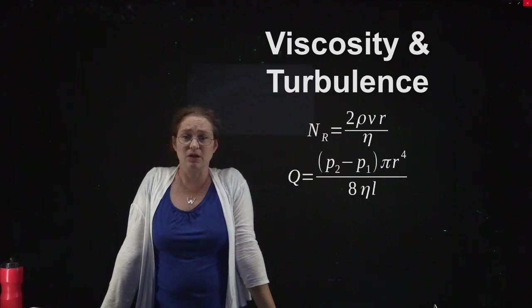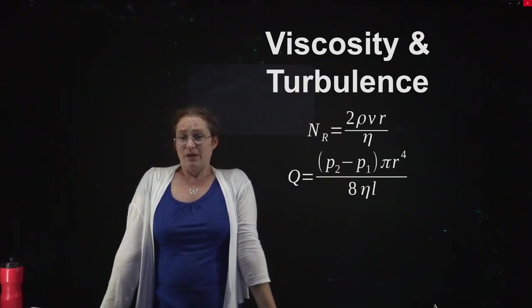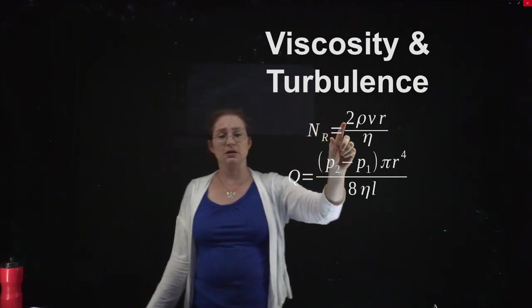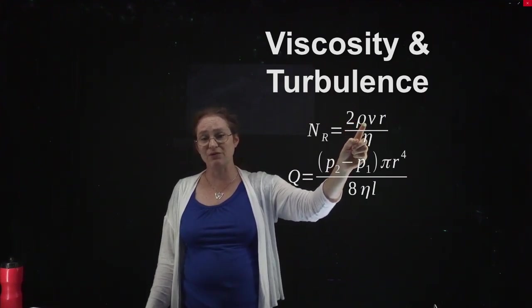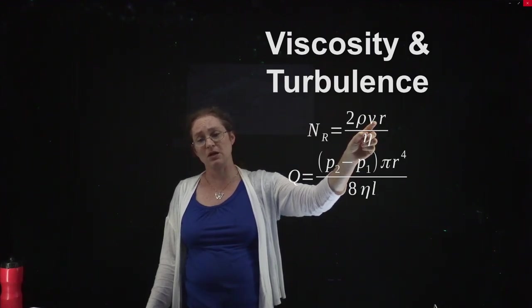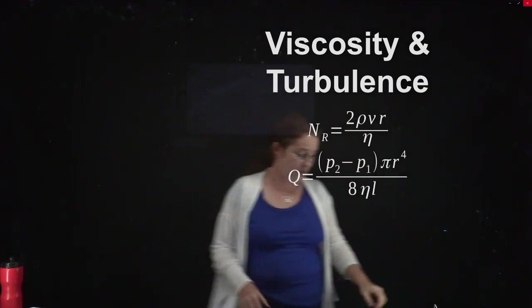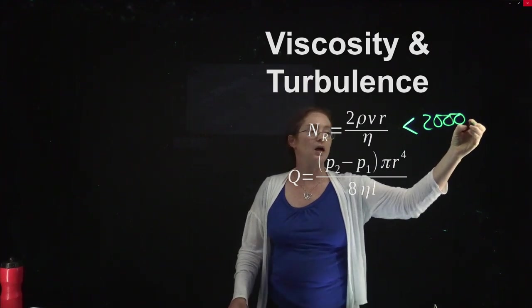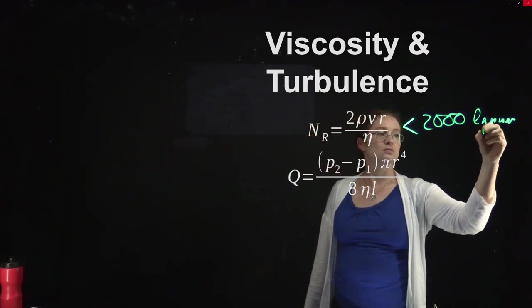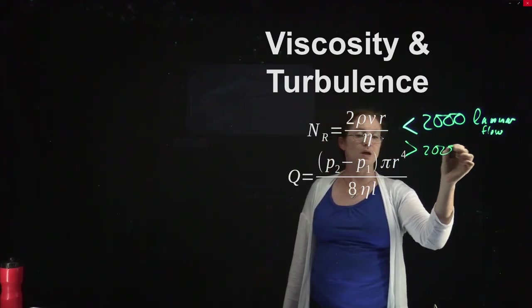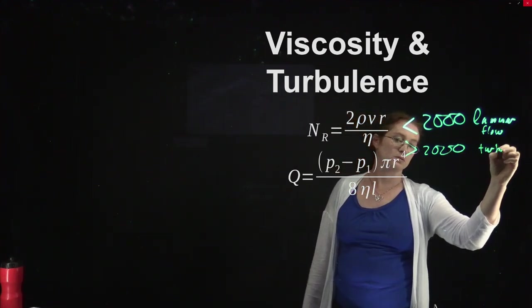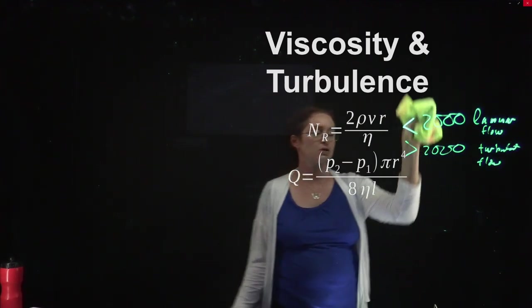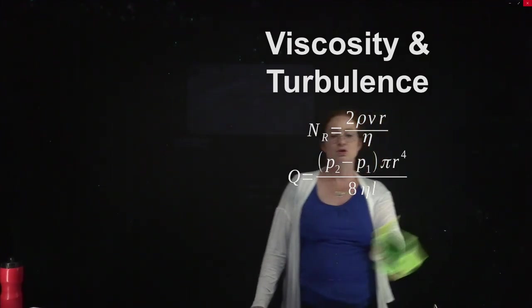The Reynolds number is given by R = 2ρvr/η — two times density times speed of the fluid times the radius of the pipe, divided by the viscosity η. For a Reynolds number less than about 2,000, you have laminar flow. For a Reynolds number greater than about 2,000, you have turbulent flow. One class of problems in this chapter is to look at different fluids and calculate whether you have laminar or turbulent flow.